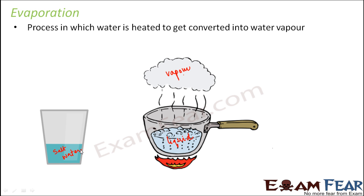That is where evaporation would help. If you take that salt water and heat it, all the liquid water will get converted into vapor. By the time all the water has evaporated, what will be left behind in the pan is the salt. This is a way by which you can separate soluble substances from water, because all the other methods we looked at were helpful only in separating insoluble substances like sand, mud, or clay. Now you will also be able to separate soluble substances.